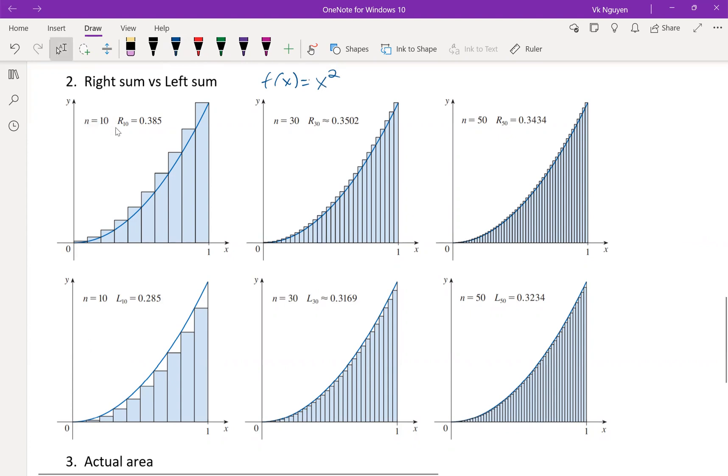So if you take a look for n equal 10, the right sum gives us 0.385, and as we increase the number of rectangles, the right sum is getting smaller and smaller because the area above the curve is getting smaller and smaller. As for the left sum, we begin from n equal 10 and the left sum is 0.285. As we increase the number of rectangles, you see that the left sum is increasing, and then eventually the right sum will be exactly the same as the left sum as n gets bigger and bigger.